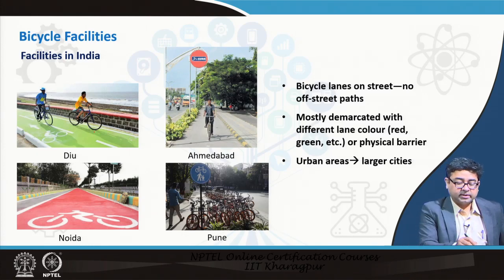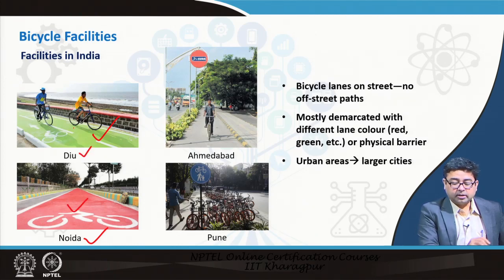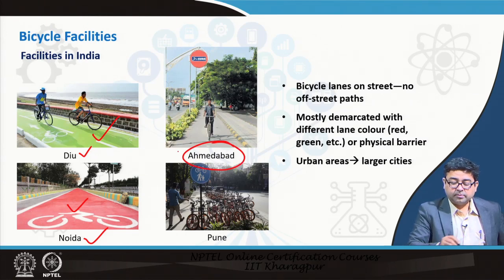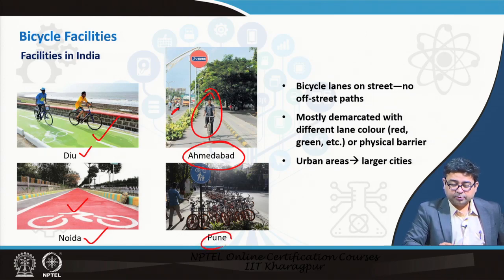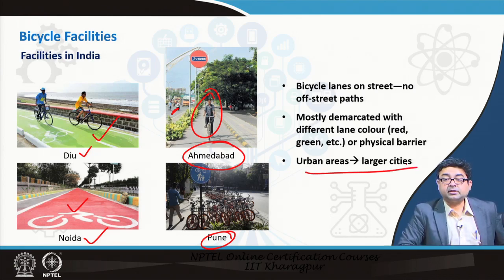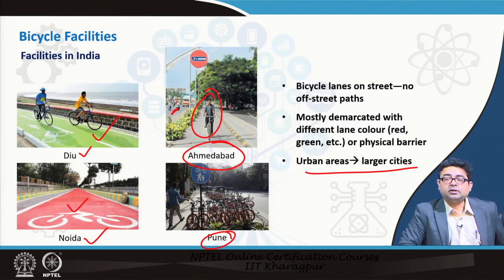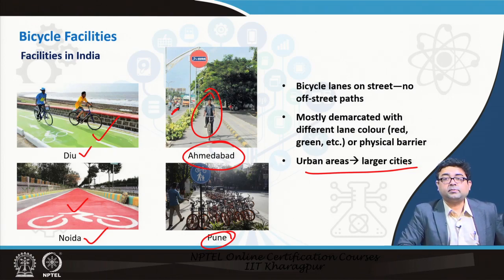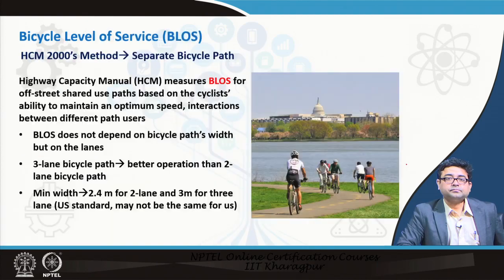In India also, these facilities are coming up. In Noida they are colored in red; in Daman and Diu they are in green; Ahmedabad has dedicated bicycle lanes segregated from the main traffic, and so has Pune. These urban areas are seeing dedicated bicycle facilities that help in safety and in the operations of general traffic lanes, reducing congestion as fewer slow-moving vehicles are on the regular traffic lanes.